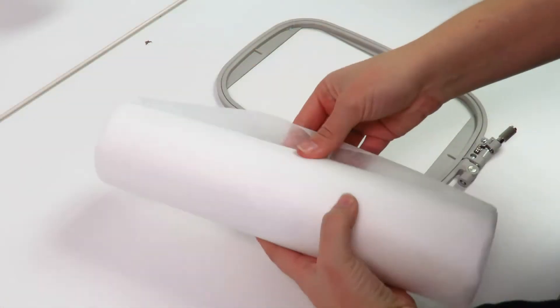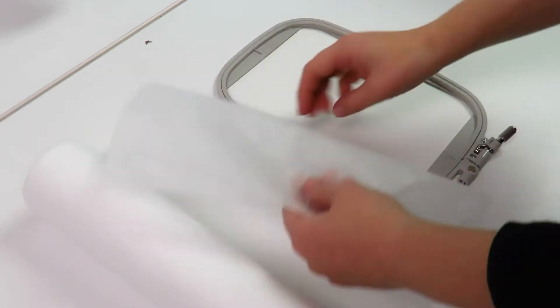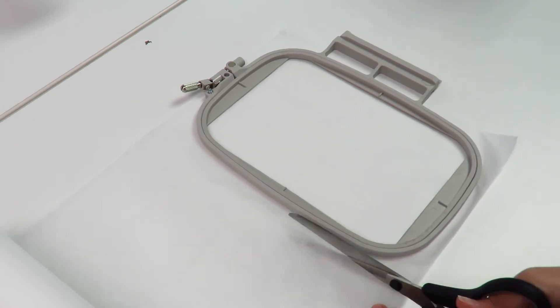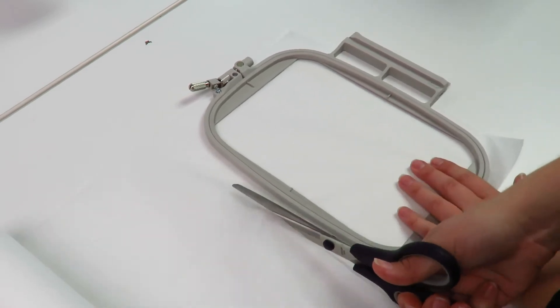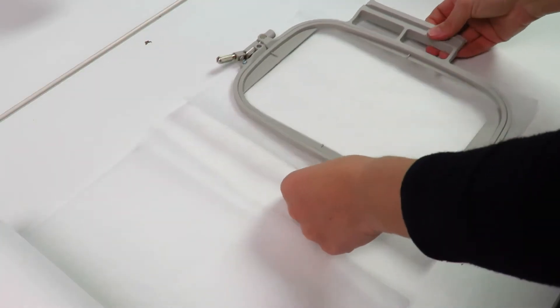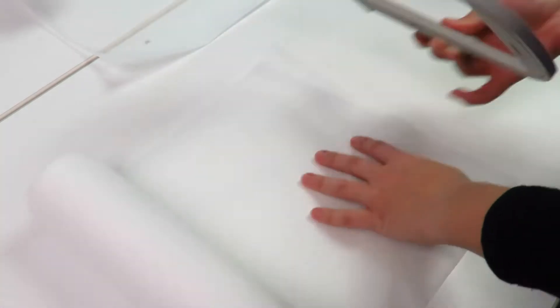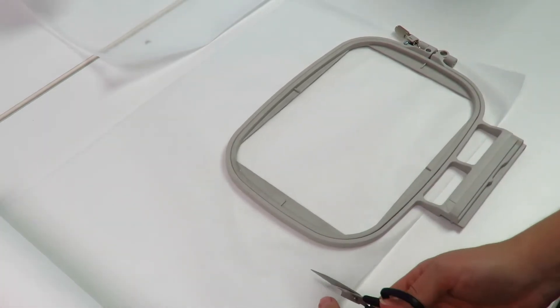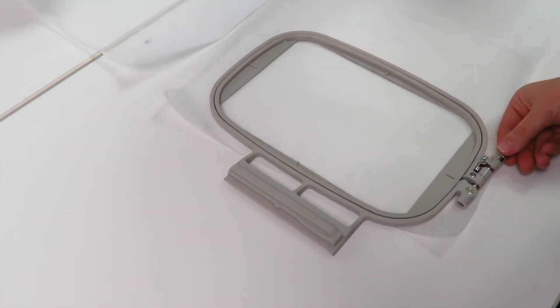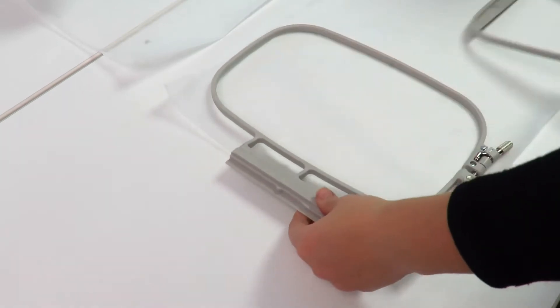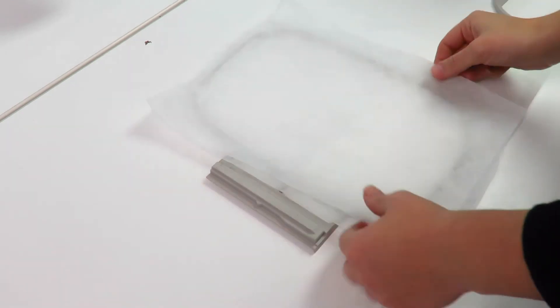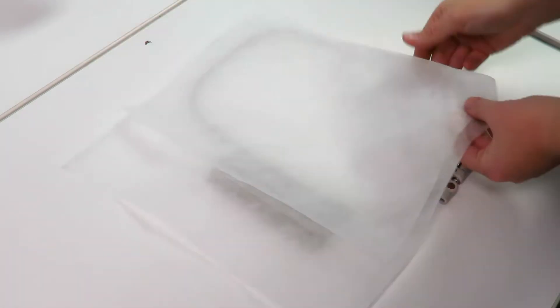Frame an embroidery frame with two layers of Avalon Plus stabilizer. For more stability, it is best to cross-layer the stabilizer by laying each layer in an opposite direction.